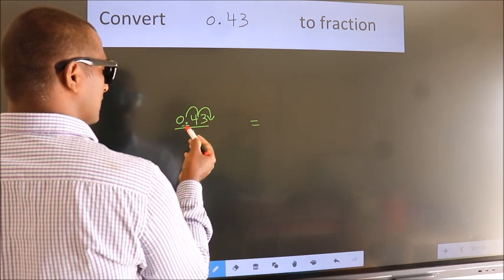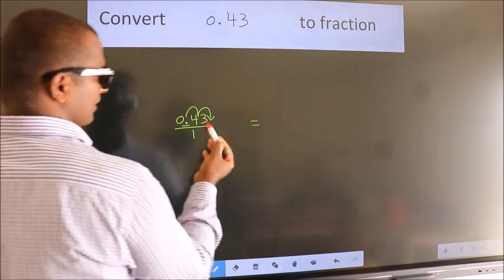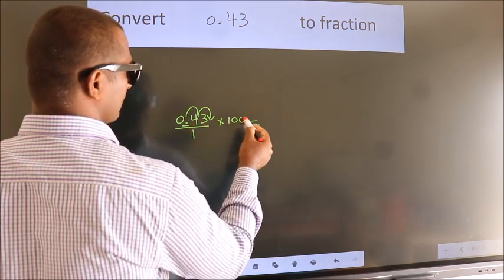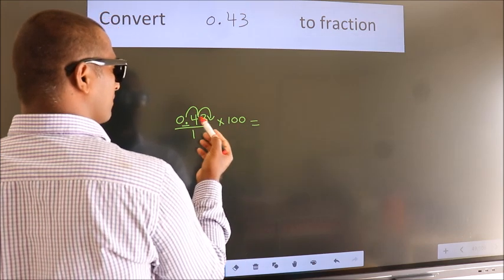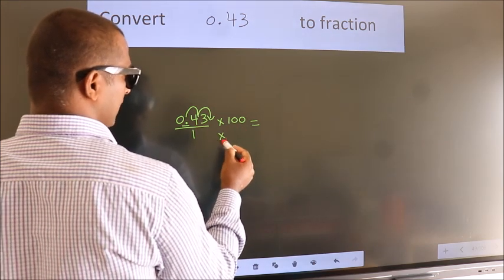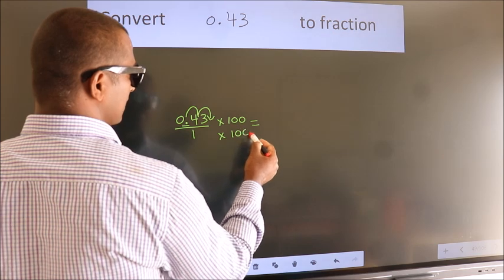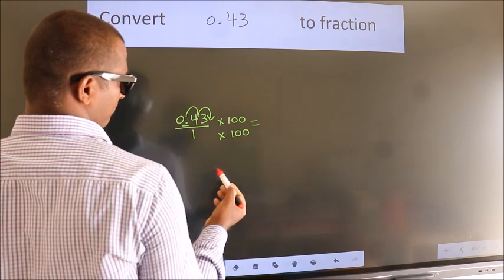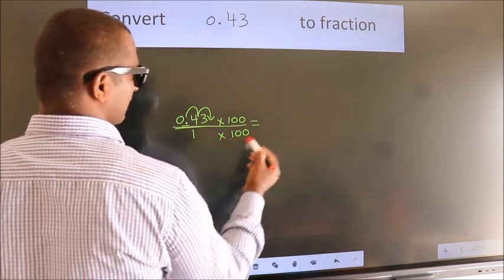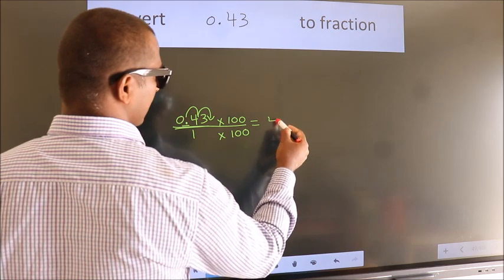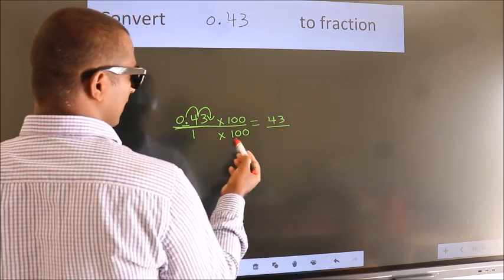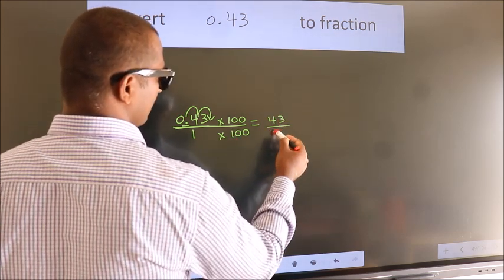To move this decimal after 2 numbers, we should multiply it with 100. Whatever you are multiplying in the numerator, in the denominator also we should multiply by the same. So 0.43 into 100, we get 43. In the denominator, 1 into 100 gives 100.